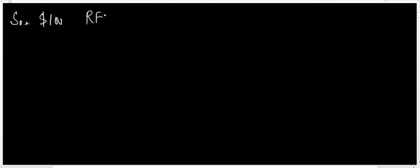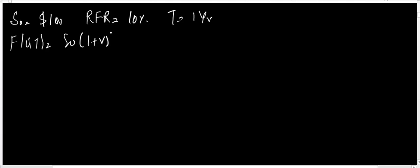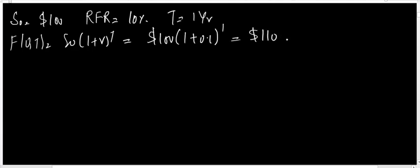Now let me build another scenario. Say the spot price is $100, the risk-free rate is 10%, and the time period is 1 year. The forward price is spot price times (1 + R) raised to the power of t, which is $100 times 1.1 raised to the power 1, giving $110. Now what if the dealer offers a forward price of $120? How would we use arbitrage to earn profits from this mispricing?